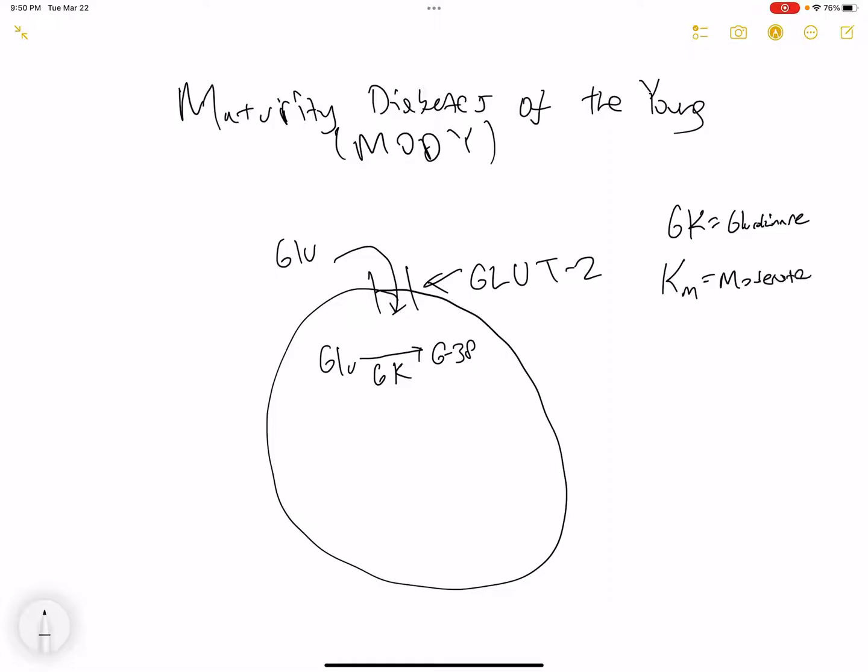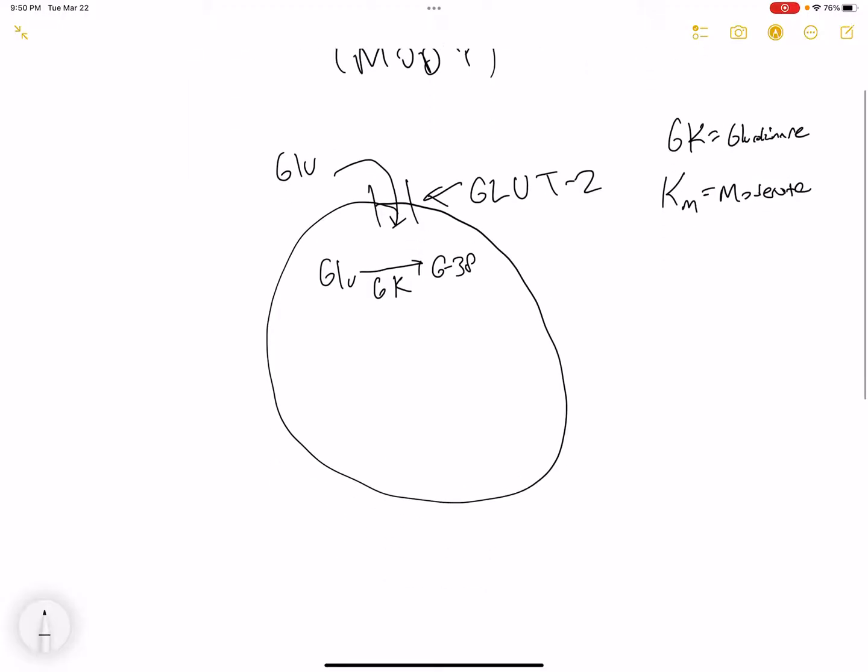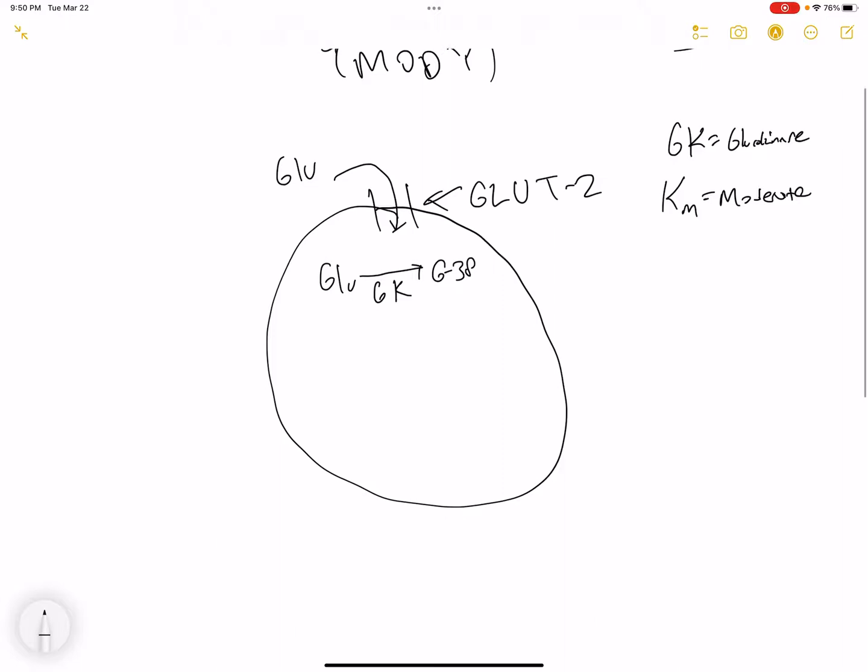The reason for this is because we don't want the activation of this enzyme if you only have low levels of glucose, because it can result in hypoglycemia by the excess exocytosis of insulin into our bloodstream. And this is why it is important for this glucokinase to have a moderate Km.